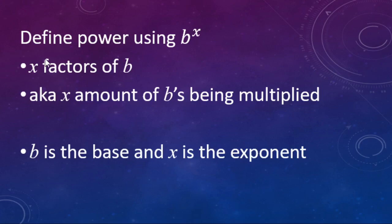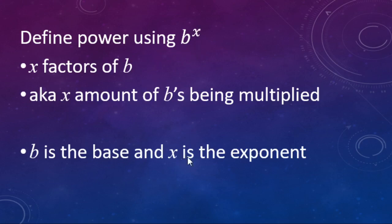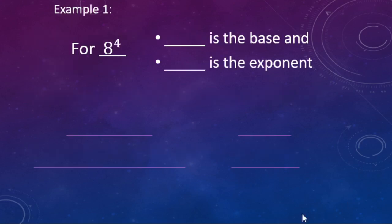Another way of looking at that is b to the x power. Using formal language, that's going to be x factors of b. The way we think about it is we have x number of b's all being multiplied together — things being multiplied are factors. In this expression, b is the base and x is the exponent.